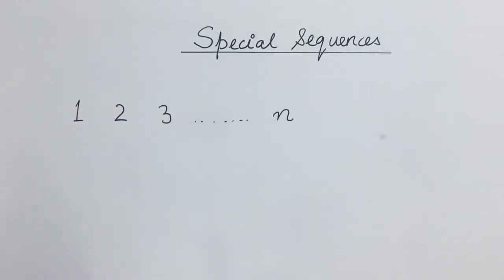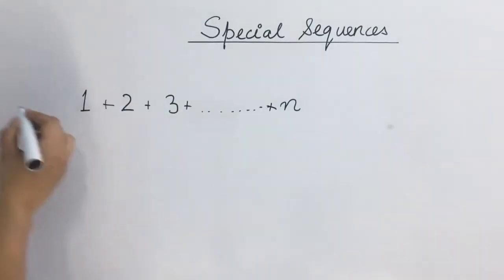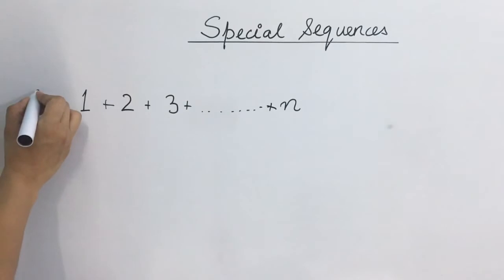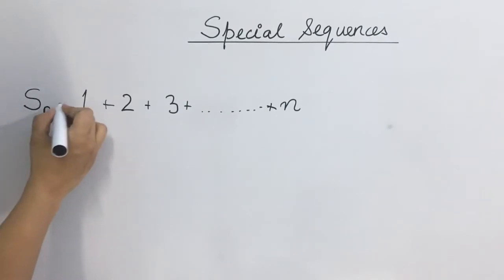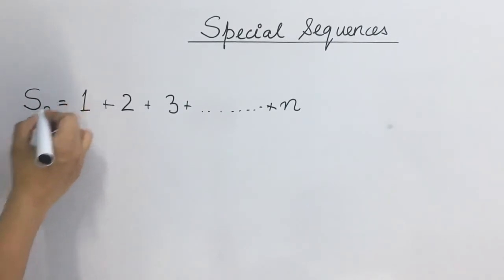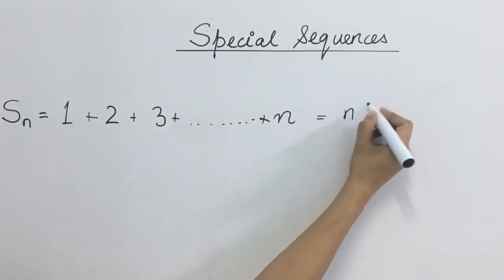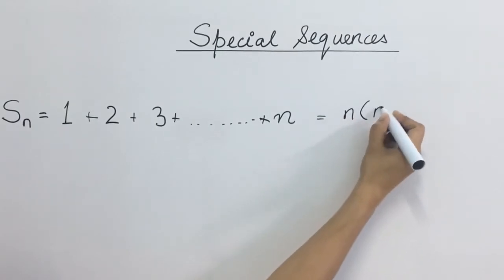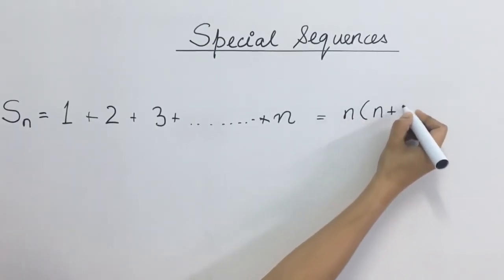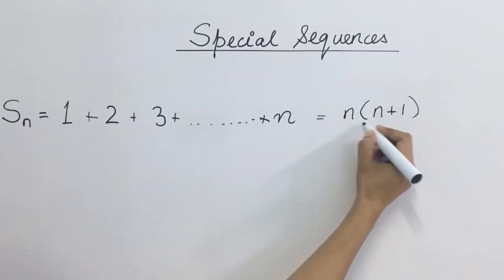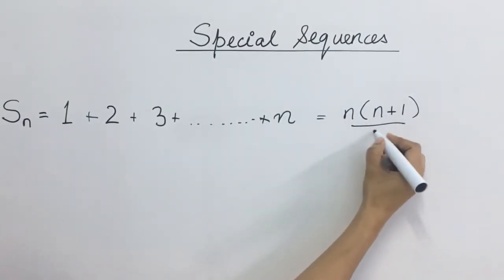We have taken a series of first n natural numbers. Yadi ham in sab ko add kar dete hain, then this is going to be Sn, aur iski value hogi n into n plus 1 upon 2.